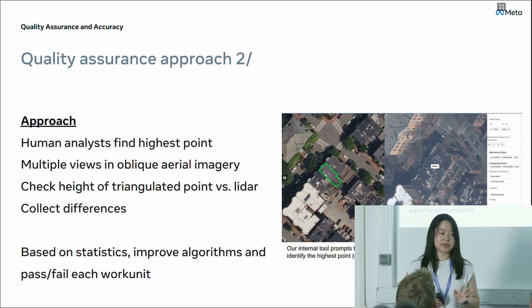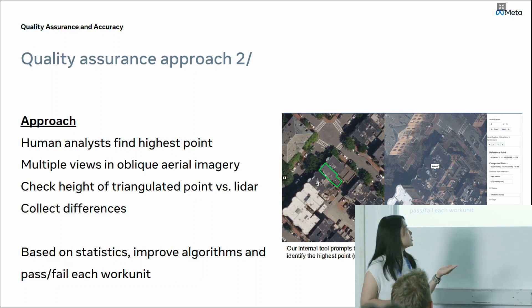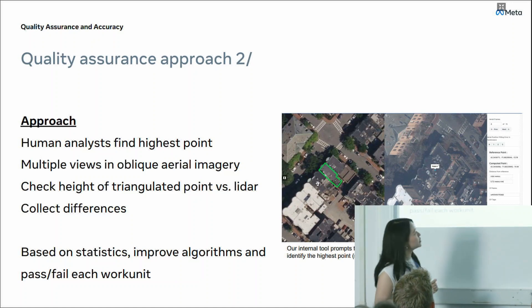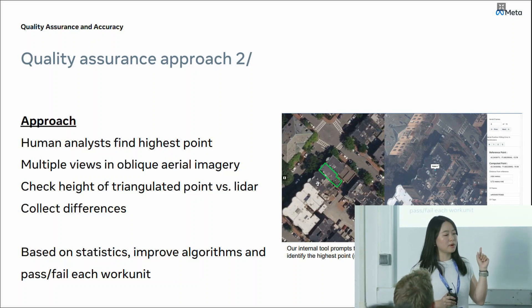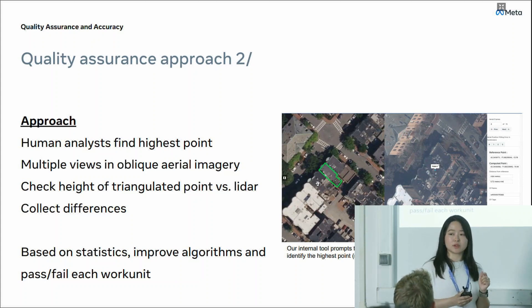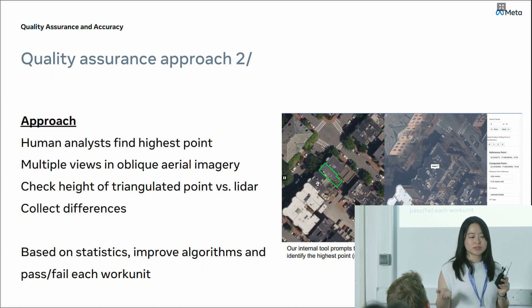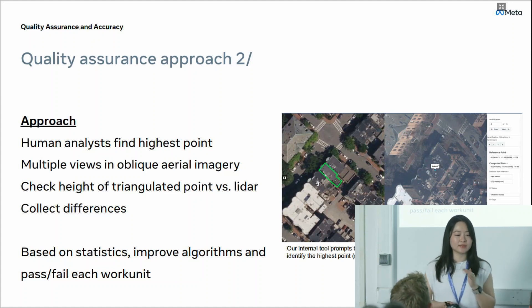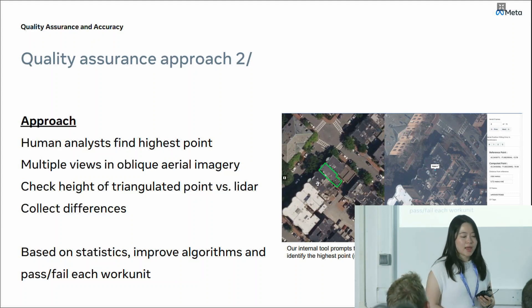After we have the sample dataset available, we include a human in the loop. We have human annotators annotate the highest points of buildings using an internal tool we built. The annotation happens on multiple oblique aerial imagery views. After they finish annotating every single building, we move on to a validation step, which is checking the height of triangulated points against the LiDAR estimations. We calculate the differences — which is the error — and based on the statistics we improve the algorithm and pass or fail each word unit.